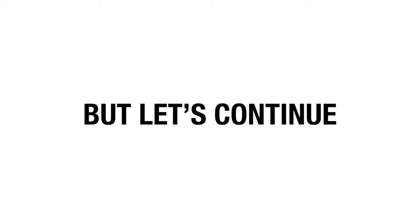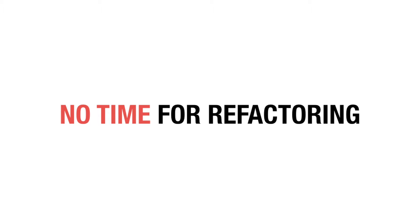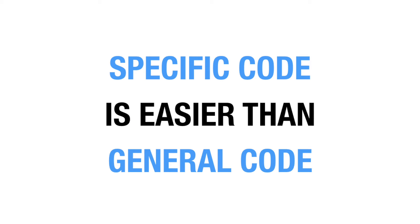What I'm saying is this: the general consensus seems to be that in order to go fast, I have to write bad code. By bad I mean code that you would probably later want to refactor, but you choose not to refactor now because you just want to move fast. So the argument would go something like this: specific code is faster to write than general code, because figuring out abstractions is difficult.